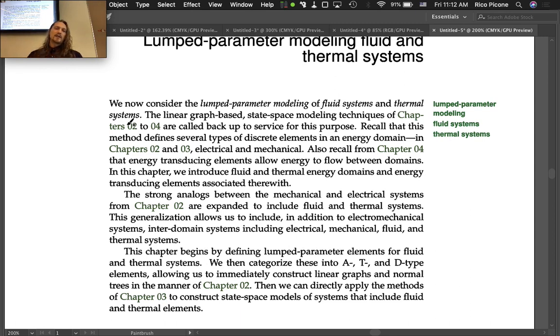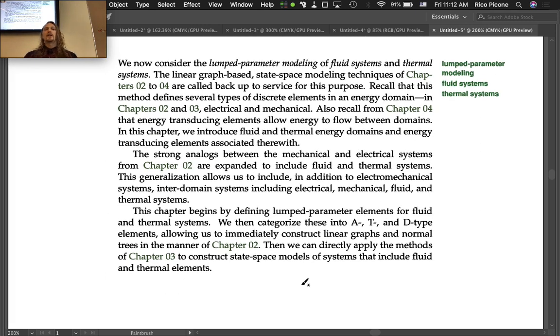This chapter begins by defining lumped parameter elements for fluid and thermal systems. We then categorize these into A, T, and D type elements, allowing us to immediately construct linear graphs and normal trees in the manner of Chapter 2. We're also going to do sources as well - A, T, D, and sources.